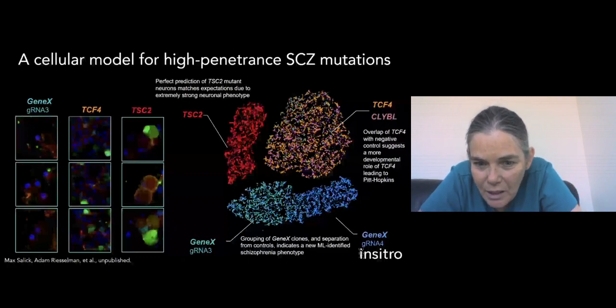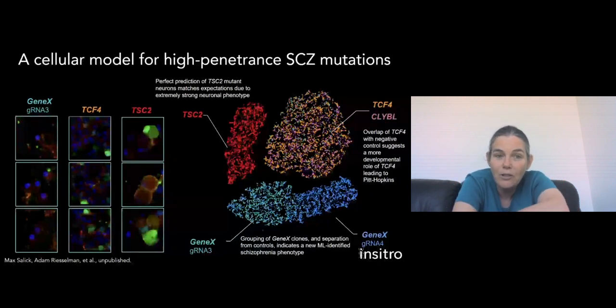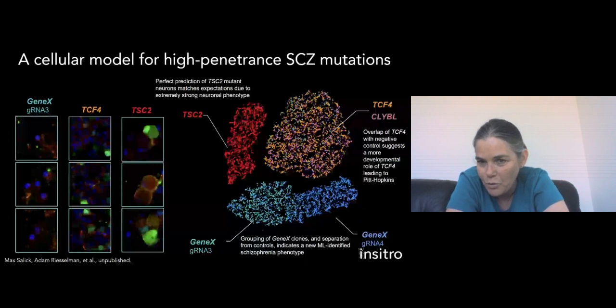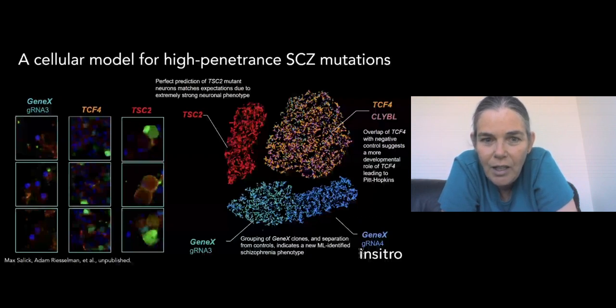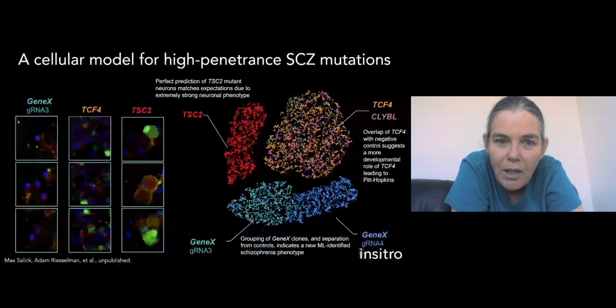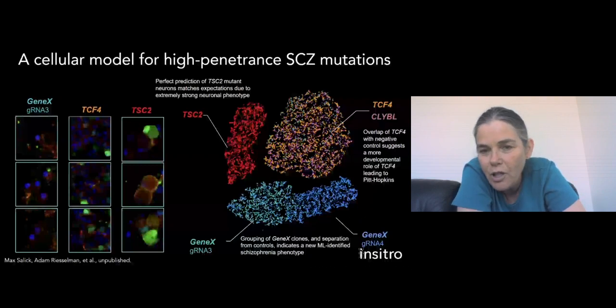So what we see here are different interventions with, in this case, four different genes. And it's actually quite interesting to see what we observe here. So, first of all, TSC2 is a very well-understood mutation. It's been observed in previous work, and it creates a very strong high-visibility phenotype in those mutated cells, and you can see that they look quite different. And sure enough, the machine learning was able to see that these iPSC-derived neurons are quite different in the TSC2 mutants than they are in the wild-type controls.